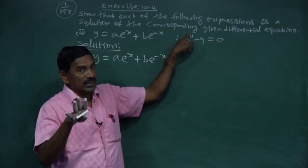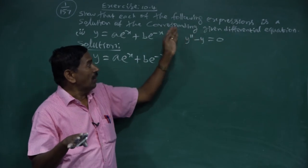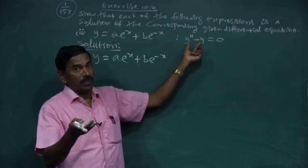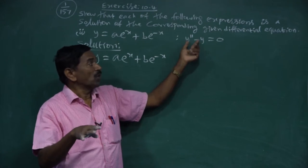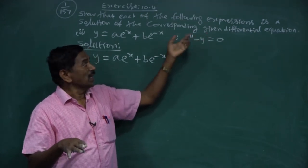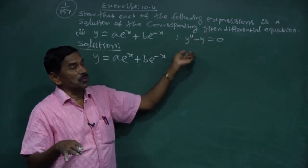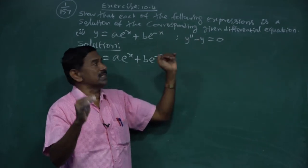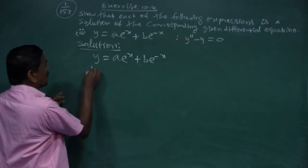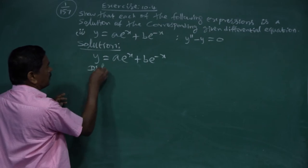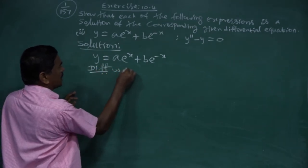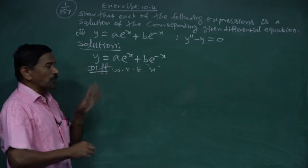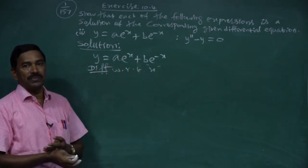In the required answer, we need y'' - y = 0. The highest order of differentiation is y'', so we need to differentiate twice. After differentiation, if we get the same answer, no problem; otherwise we adjust.